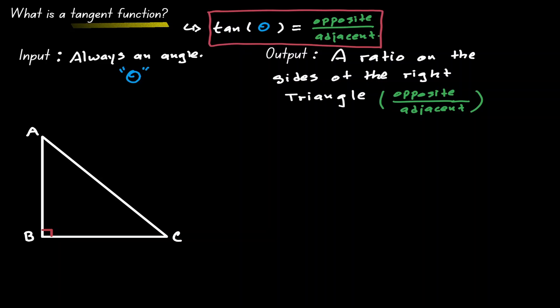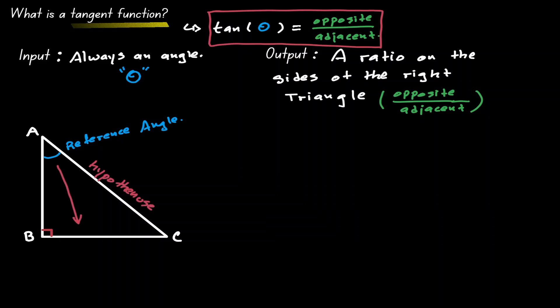Let's illustrate this idea. Let's choose A to be our reference angle and label our triangle according to this angle. Our hypotenuse is in front of the angle that is 90 degrees. Our opposite is the side opposite our reference angle. And our adjacent is the side that is next to the reference angle. Based on this labeling, we can find the tangent of A.